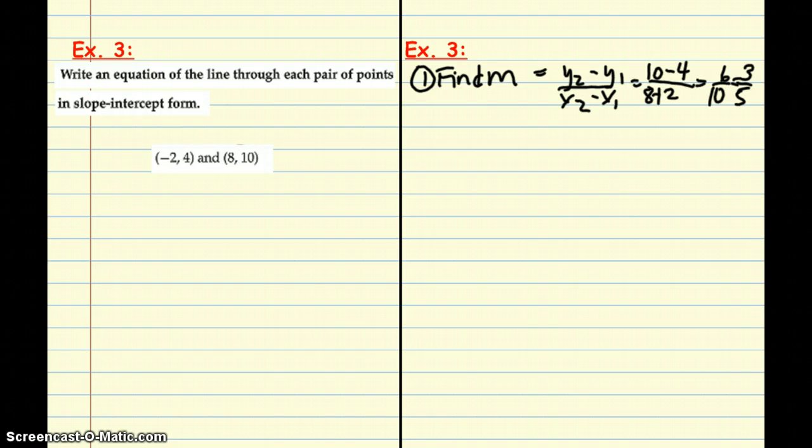Now, not only do we not have our slope, but we also need to find our y-intercept. So, we're going to find b. And how are we going to do that? We're going to use, again, because we're going to write this in slope-intercept form, we're going to use the equation y equals mx plus b like a formula.